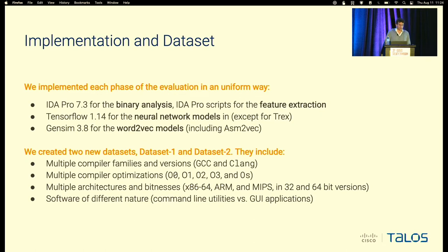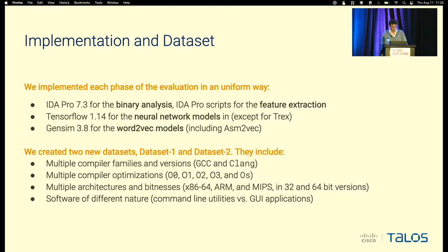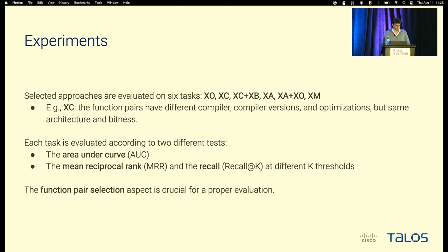In terms of implementation, we wanted a fair evaluation, so we implemented all approaches in a uniform way. For this we used IDA Pro for binary analysis and scripting, TensorFlow and PyTorch for the neural network implementation. For the dataset, we created two new datasets covering all different compilation options: multiple compilers, multiple compiler versions, different optimizations, different architectures, and different software. We want to release everything, but we are a bit behind schedule because we underestimated the effort of open sourcing within a large company — we had to review all the code. Everything will come, but we need a little more patience, and we're sorry for the delay.